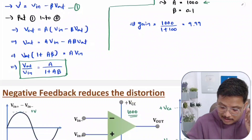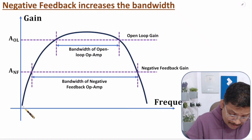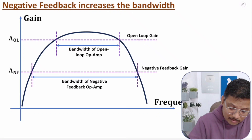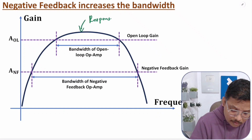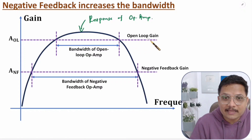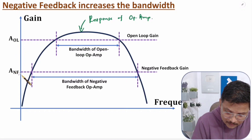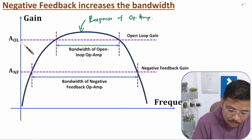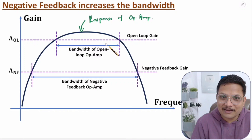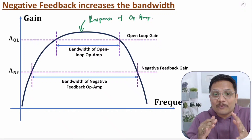The third advantage is that negative feedback increases bandwidth. Looking at the frequency response plotted as gain versus frequency: the open-loop gain A_OL is very high but works over a lower frequency range. With negative feedback, the gain is lower, but we are working with a larger frequency range. So negative feedback increases bandwidth — the op-amp can work over a much larger frequency range with feedback applied.